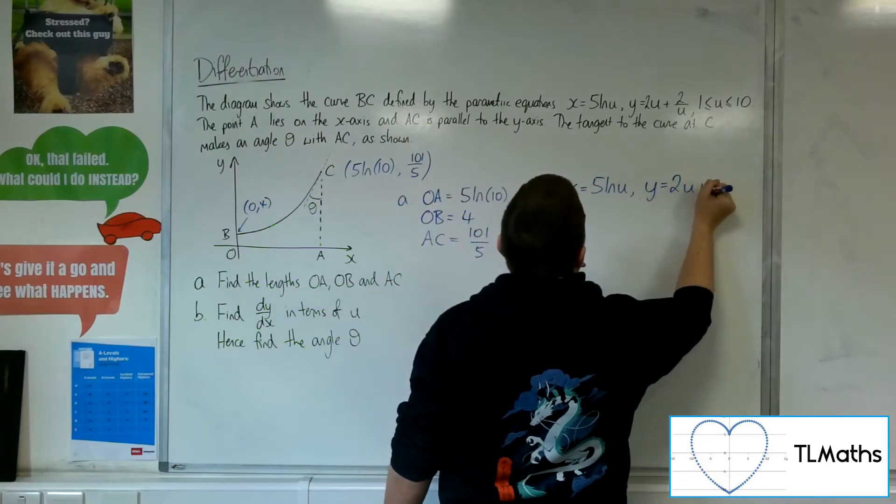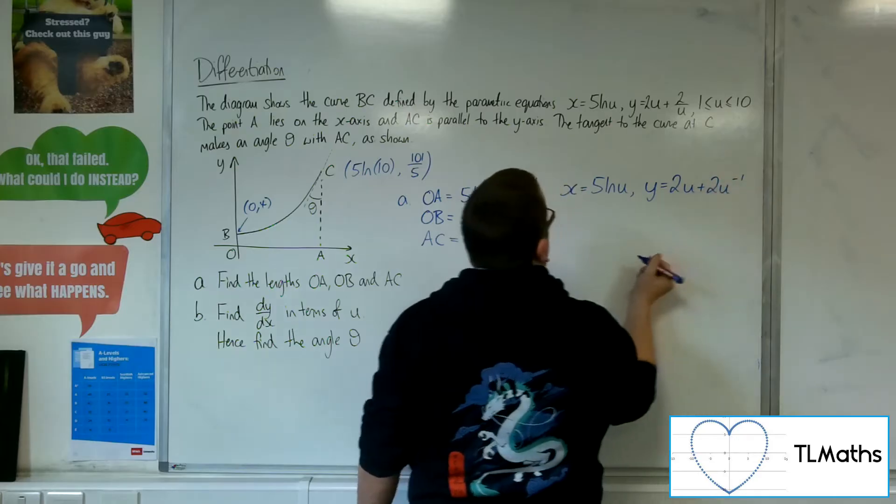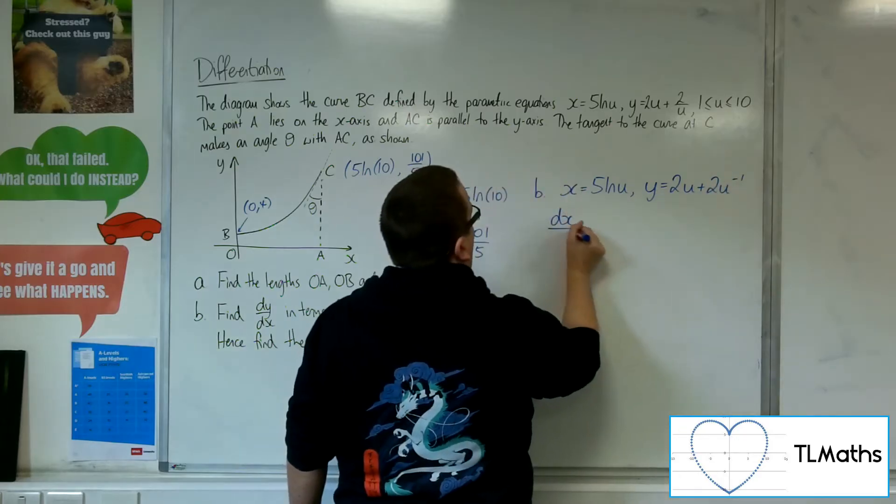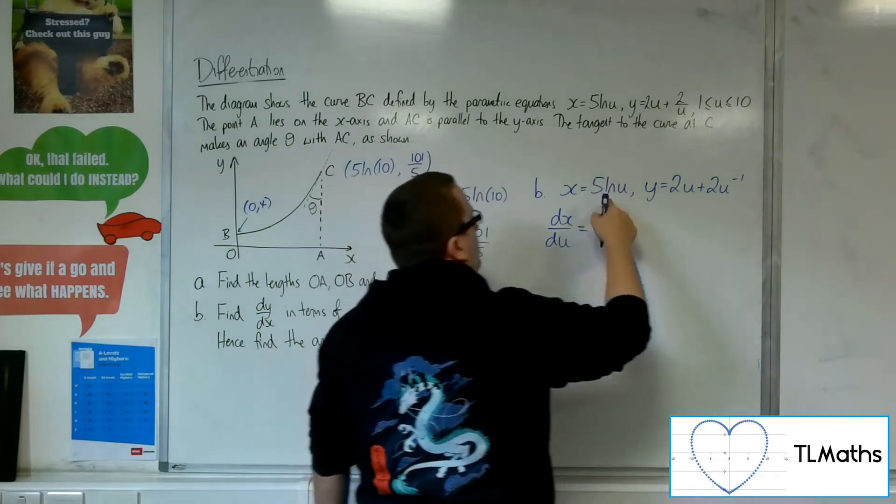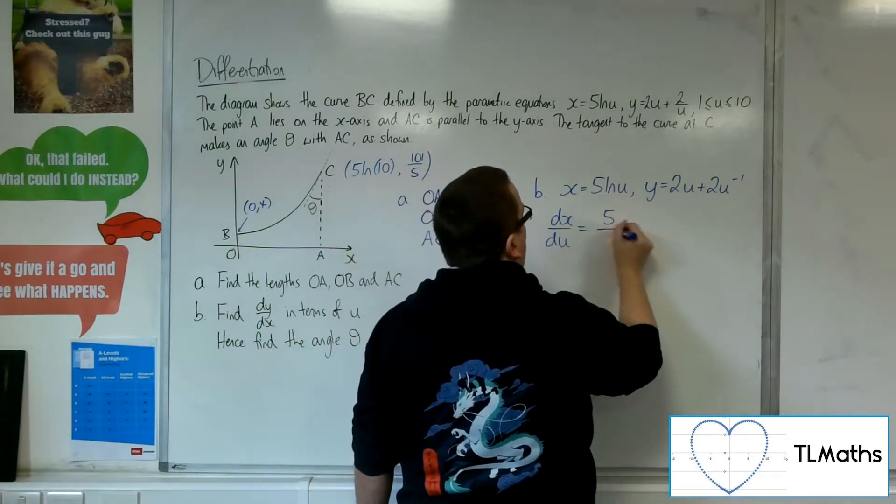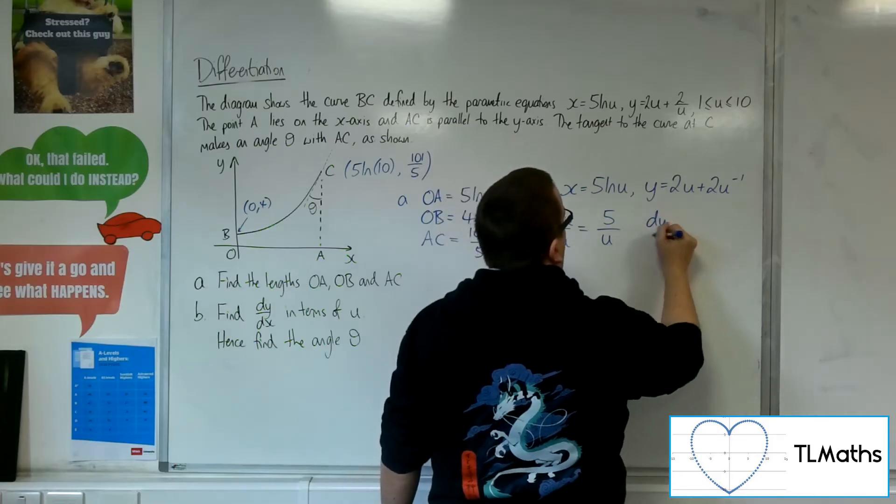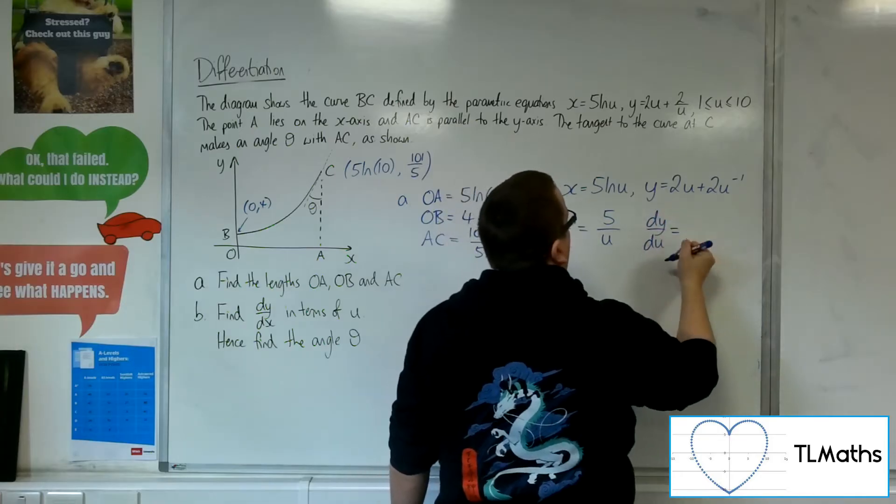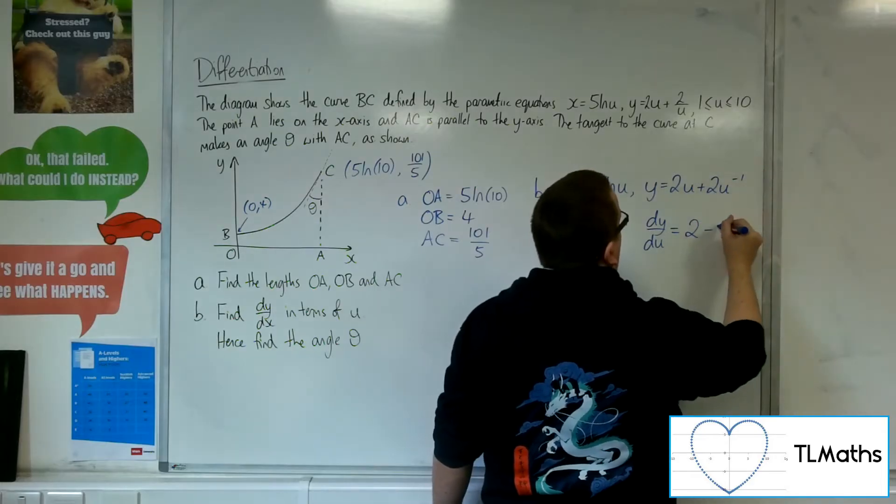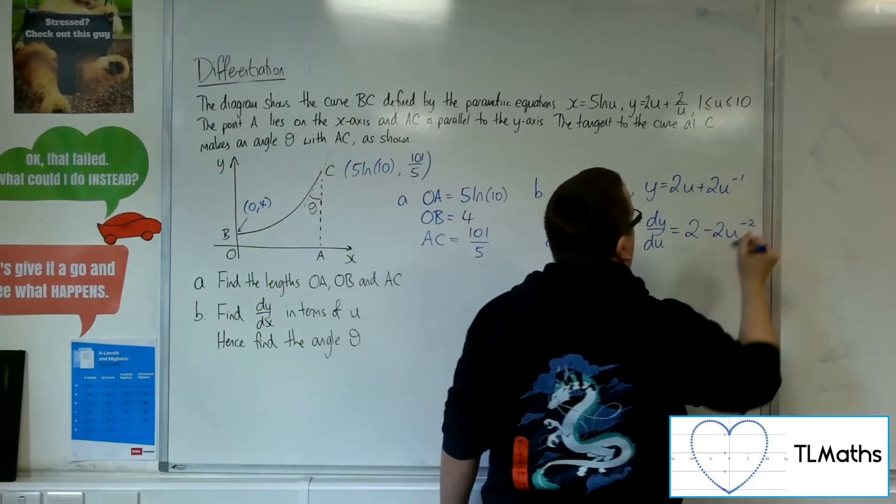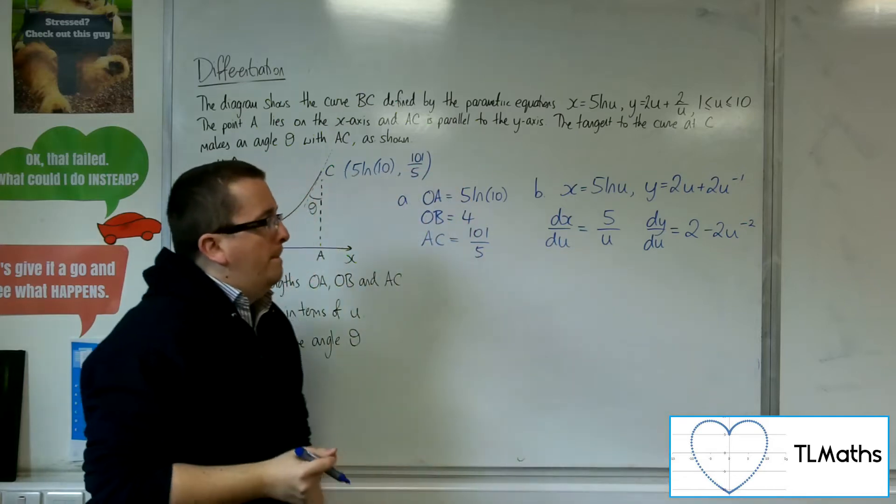So y is equal to 2u plus 2u to the minus 1. So dx by du will be the first derivative of this with respect to u, which is 5 over u. And dy by du will be 2. The minus 1 comes down to the front, so minus 2, take 1 off the power, to the minus 2.